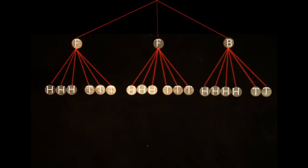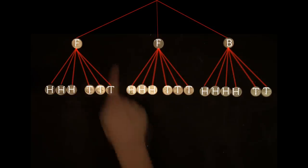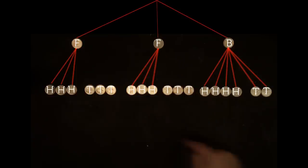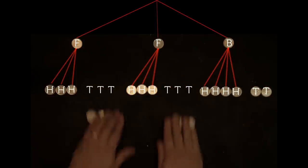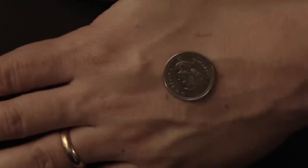When Bob shouts the result, HEADS! This new evidence allows us to trim all branches leading to tails, since tails did not occur. So, the probability that he chose the bias coin, given heads occur?